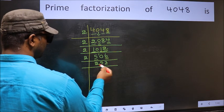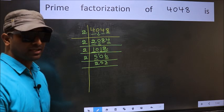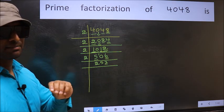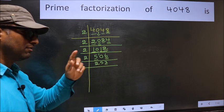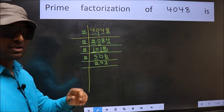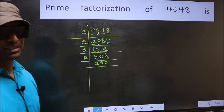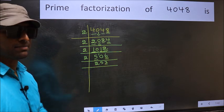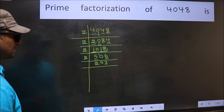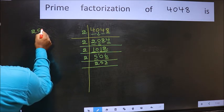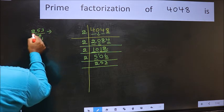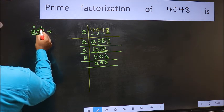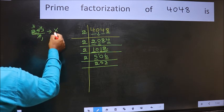Now the last digit 3 is not even, so not divisible by 2. Next prime number 3 — to check divisibility by 3, we should add the digits: 2 plus 5 plus 3 equals 10, and 10 is not divisible by 3, so this number is also not divisible by 3. Next prime number 5 — last digit is neither 0 nor 5, so not divisible by 5. Next prime number 7 — a number close to 25 in the 7 times table is 7 times 3 is 21. 25 minus 21 is 4, carried forward: 43. We don't get 43 in the 7 times table, so this is not divisible by 7.